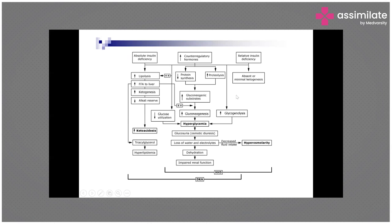When there is hyperglycemia and elevated glucose, the end result is osmotic diuresis. This glucose will draw more and more water from the tissues, leading to osmotic diuresis, loss of water, and along with that, electrolytes will also be lost. Because of loss of water and electrolytes, there will be severe dehydration leading to less renal flow, impaired renal functions, and pre-renal azotemia. If there is decreased fluid intake, that will lead to hyperosmolarity, which happens in hyperosmolar non-ketotic coma.